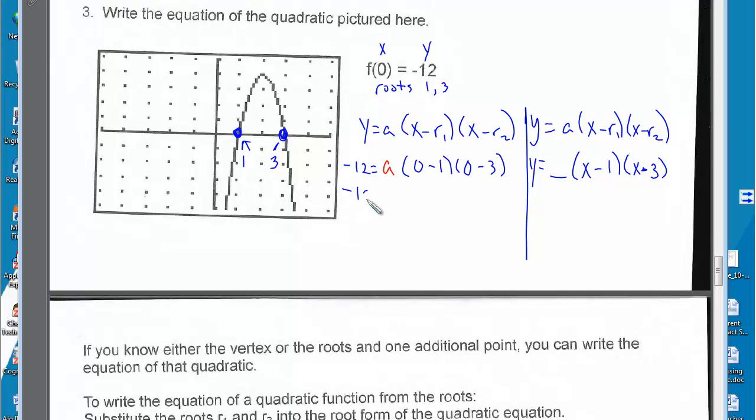So we have negative 12 is equal to a times negative 1 times negative 3. So negative 12 is equal to 3a, divide both sides by 3.